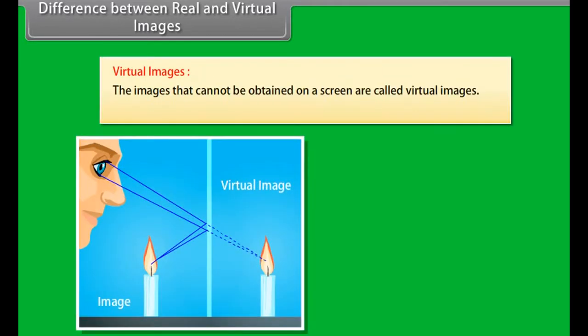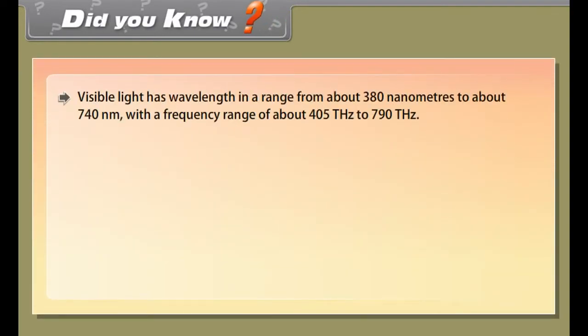Laws of reflection: First law of reflection - the incident ray, the reflected ray, and the normal all lie in the same plane. Second law of reflection - the angle of reflection is always equal to the angle of incidence.